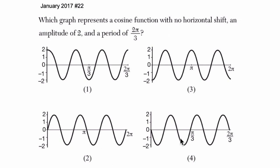Okay, so it says here that it will ask us which graph represents a cosine function with no horizontal shift, no horizontal shift, and an amplitude of 2 and a period of 2 pi over 3.